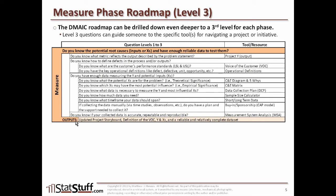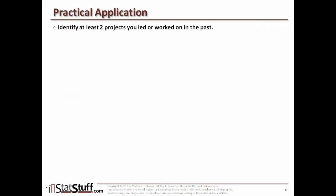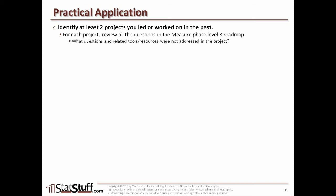The outputs expected from the measure phase include an updated project storyboard, the definition of the voice of the customer with what the Y and the x's are, and a reliable and relatively complete data set to use as you move on to the analyze phase. Before we close, try to find at least two different projects you've worked on in the past. For each, ask yourself the third-level questions we reviewed within the measure phase. Identify any questions or related tools that were not addressed in that project, why they weren't covered, and what different outcomes could have been realized if those missing elements had been addressed.